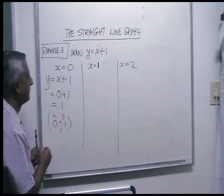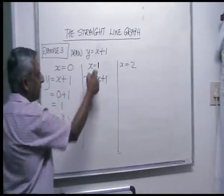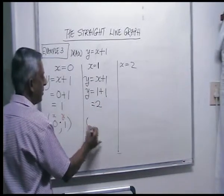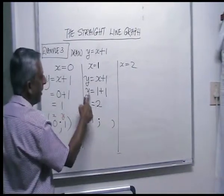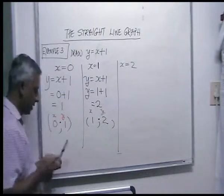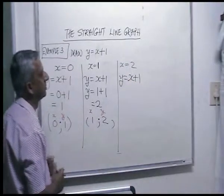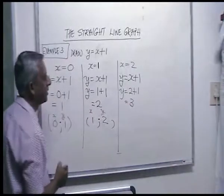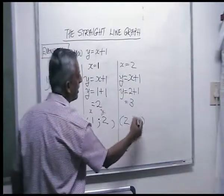That's your x and that's your y. Next: y is equal to x plus one, this time x is one, so one plus one is two. Your ordered pair is x is one, y is two. Finally, y is equal to x plus one with x is two: two plus one is three. Your ordered pair is x is two, y is three.